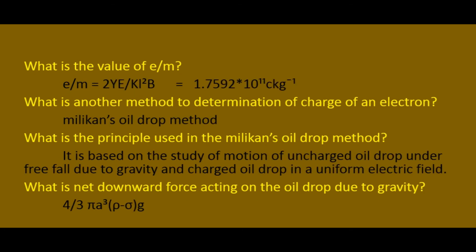What is the value of e by m? According to the JJ Thomson method, e by m equals 2Ve divided by k l squared B, and the value is 1.7592 multiplied by 10 to the power 11 coulomb per kg.